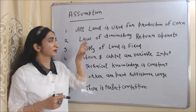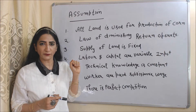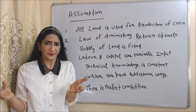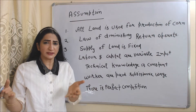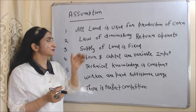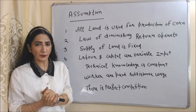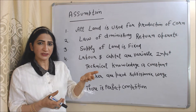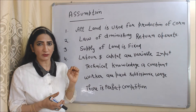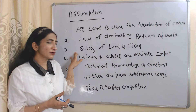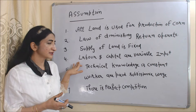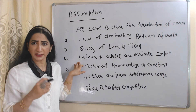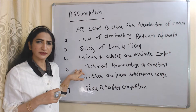Now we will see the assumptions. All land is used for production of corn — corn means plant or food grain like wheat, and here we assume wheat is essential for survival. That's why all land is used for production of corn. The law of diminishing returns applies, meaning additional units of input give us less amount of output. Supply of land is fixed, but supply of labor and capital is variable — we can change labor and capital as per requirement. Technical knowledge is constant.